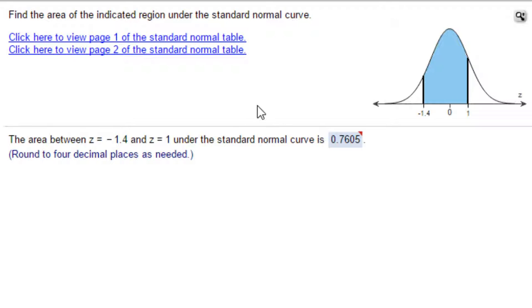The problem is that you need to find the area between minus 1.4, a z of minus 1.4, and a z of plus 1 on the standard normal curve.